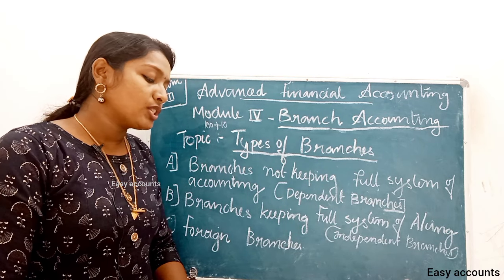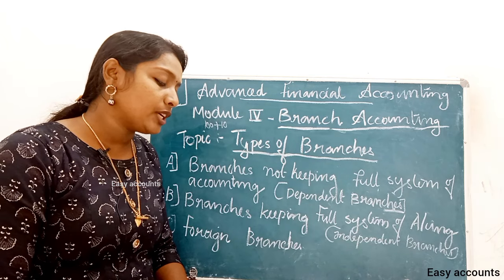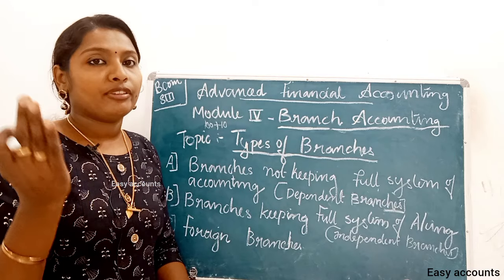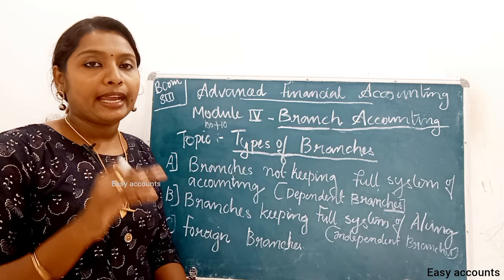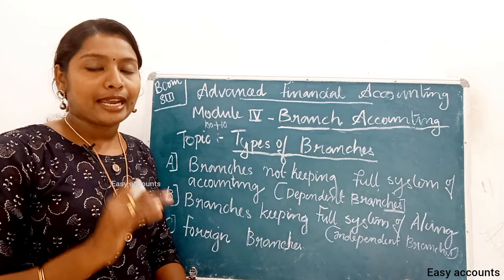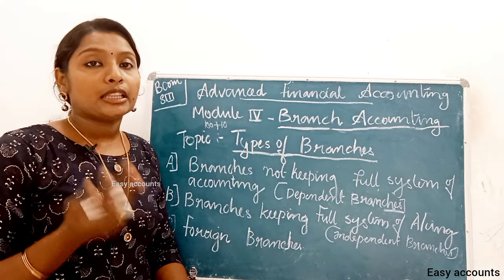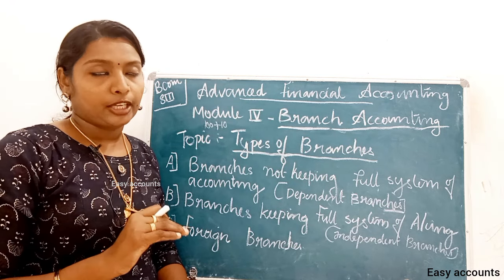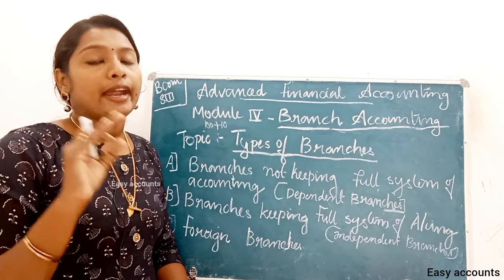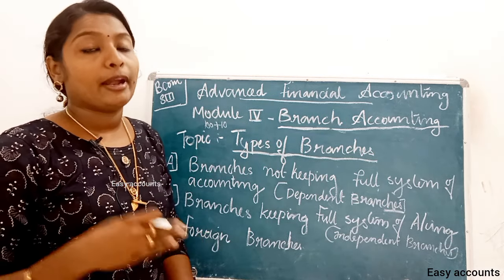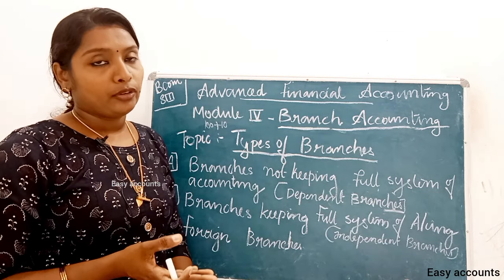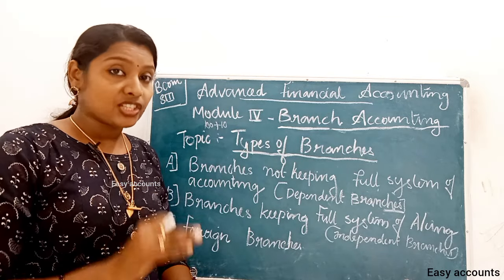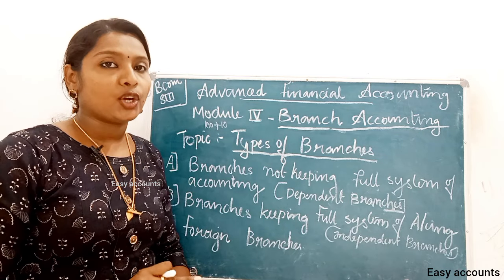Branches are instructed to deposit daily cash collections — both from cash sales and from debtors — into the bank account opened in the name of the Head Office. This means all daily cash collections go directly to the Head Office account.